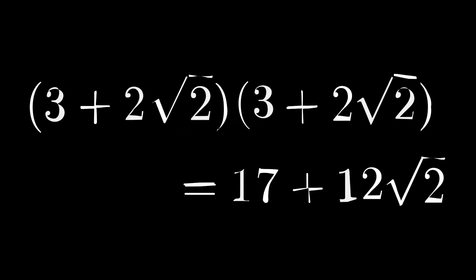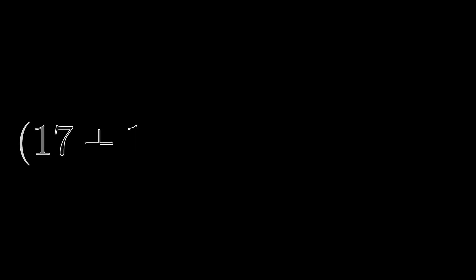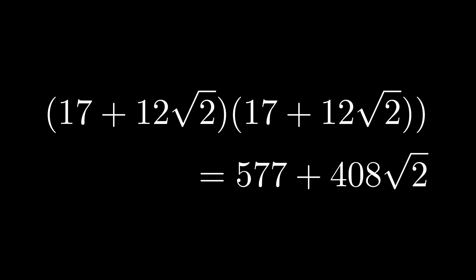Now I'm going to square this one last time. If you're doing this by hand, it's going to take a little bit longer. And I think you should get 577 + 408√2. We'll stop there, although we could continue this process arbitrarily long.